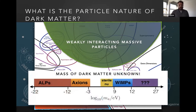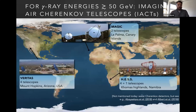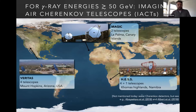Interestingly, the masses of these dark matter candidates are largely different. Axion-like particles and axions usually have masses below a millielectronvolt. Weakly interacting massive particles are usually considered to have masses between a GeV and maybe a TeV. And of course, there might be even more massive candidates like primordial black holes. So let's talk a little bit about Cherenkov telescopes.